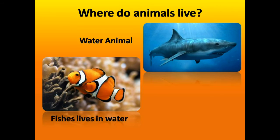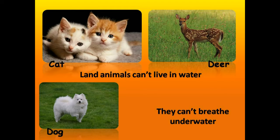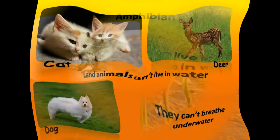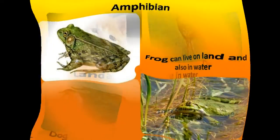Now, do all animals live on land? No! Fish lives in water. So we can call fish a water animal. Cat, dog, tiger, lion, etc. can't live in water — they live on land only. They are called land animals. Land animals can't breathe in water.